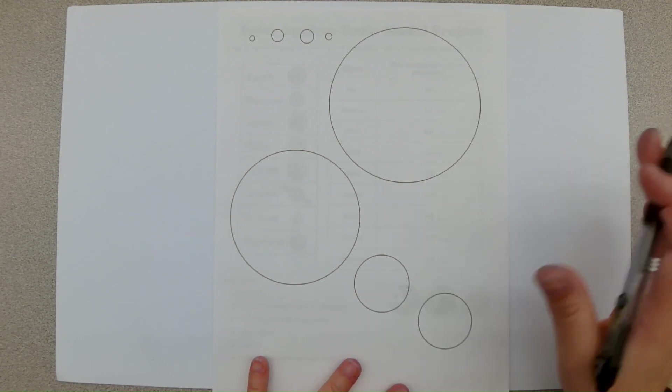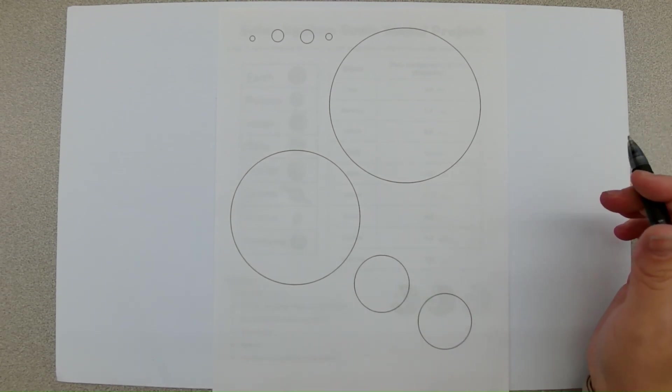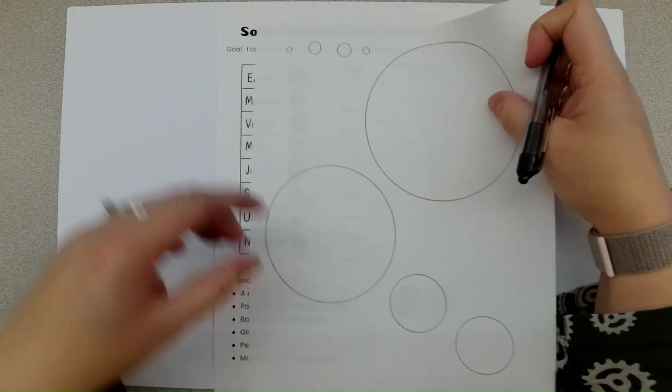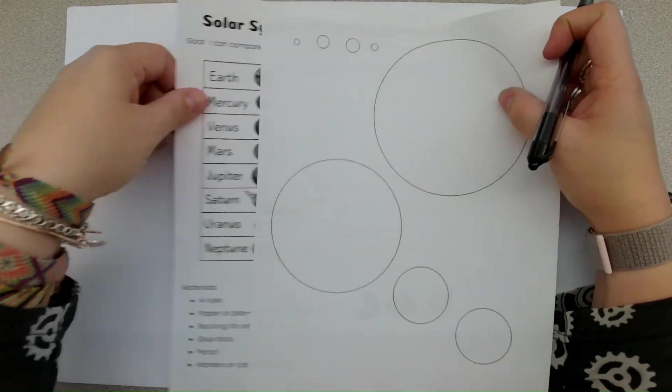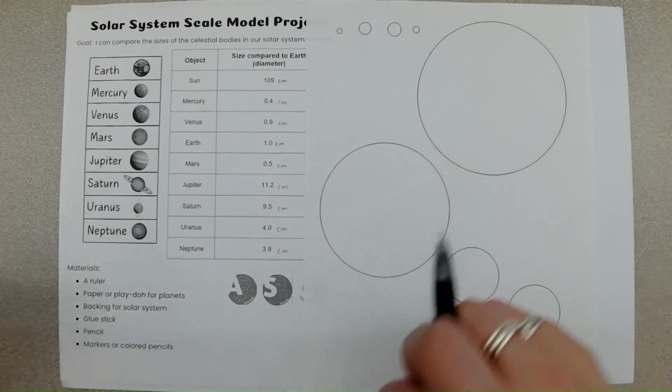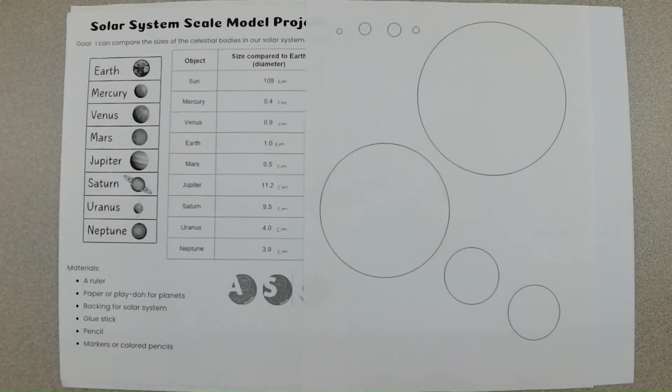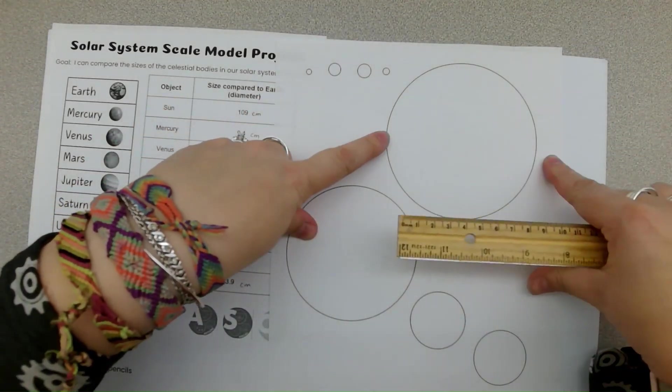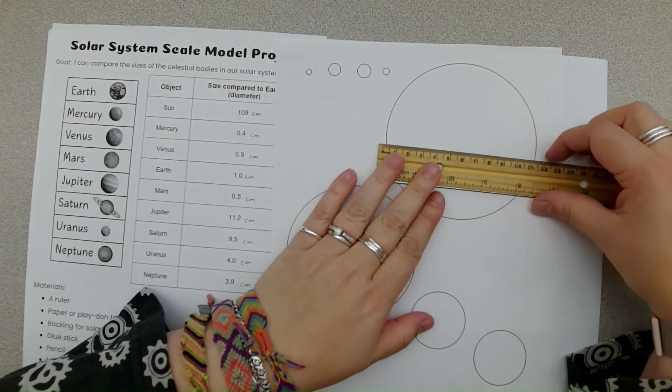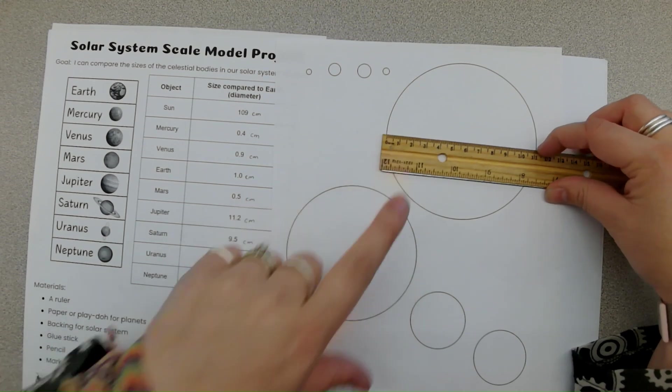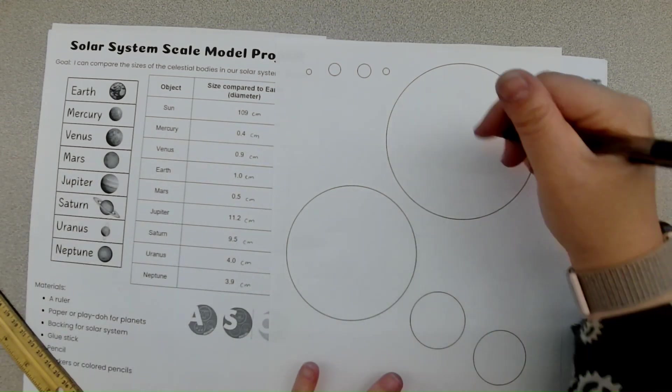So looking at these pieces here, which one do you think is going to be our Jupiter, which is our largest planet? It's probably going to be this one here. This is our largest one. And based on our information here, our Jupiter is going to be 11.2 centimeters. And if I take my ruler here, and this is the diameter. And so remember for diameter, diameter is from one side to the other. So the diameter is going to be, here we go, 11.2. Perfect.